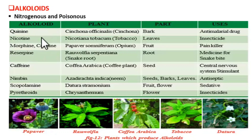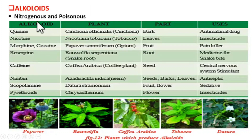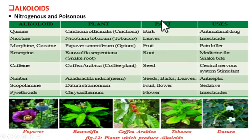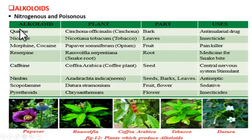Now let us see how alkaloids are useful for humans. This table is very important for exams. The first alkaloid is quinine, obtained from the bark of Cinchona officinalis. Quinine is an anti-malarial drug — a very popular drug in the past that is still used today.